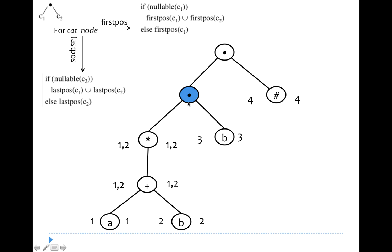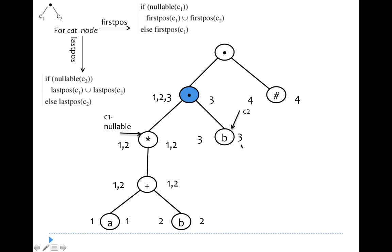For the first concatenation node with children c1 (the star node) and c2 (the leaf node 3): since c1 is a star node it is nullable, so firstpos of this concatenation node = firstpos(c1) ∪ firstpos(c2) = {1, 2} ∪ {3} = {1, 2, 3}. Since c2 is not nullable, lastpos of this concatenation node = lastpos(c2) = {3}.